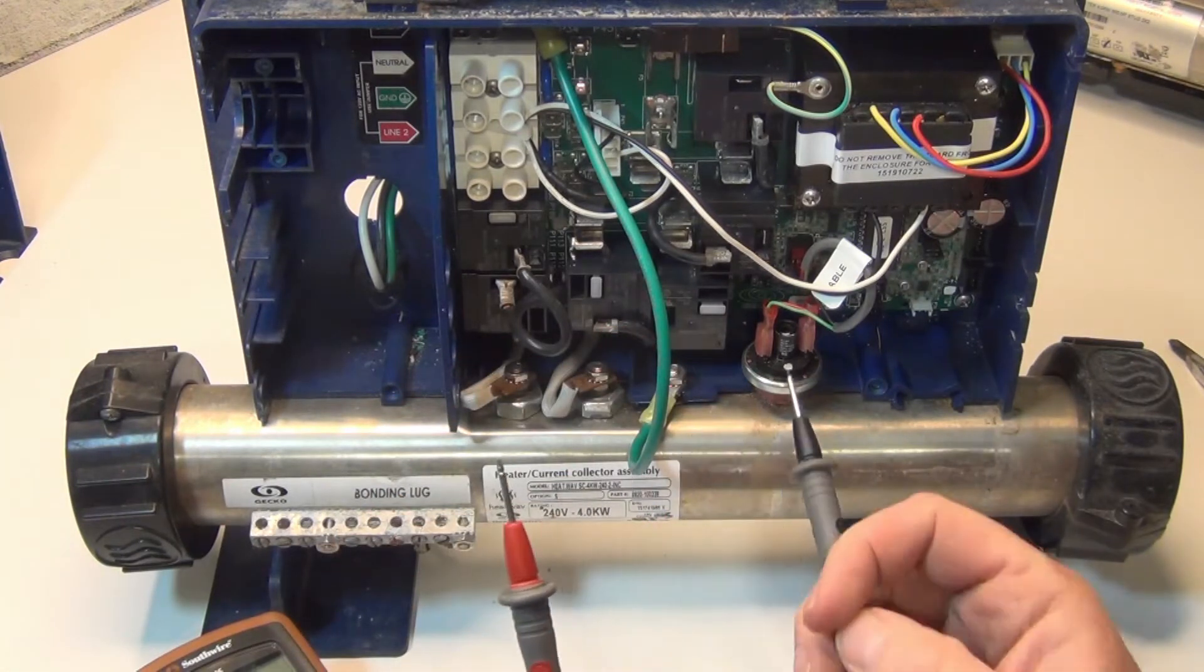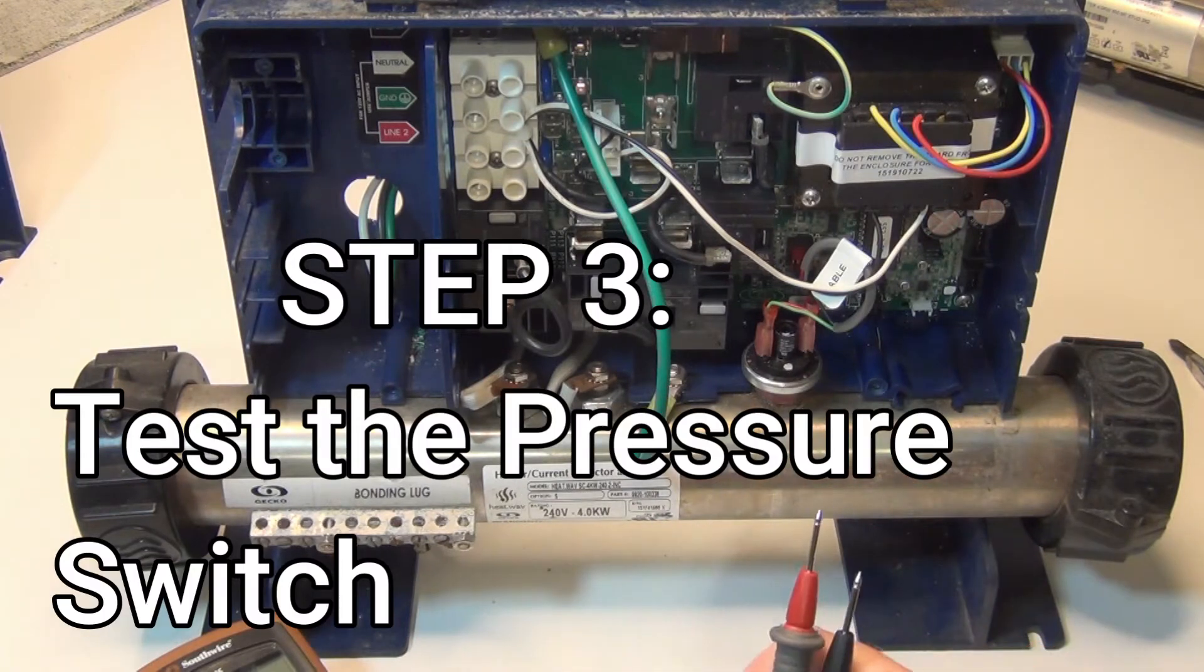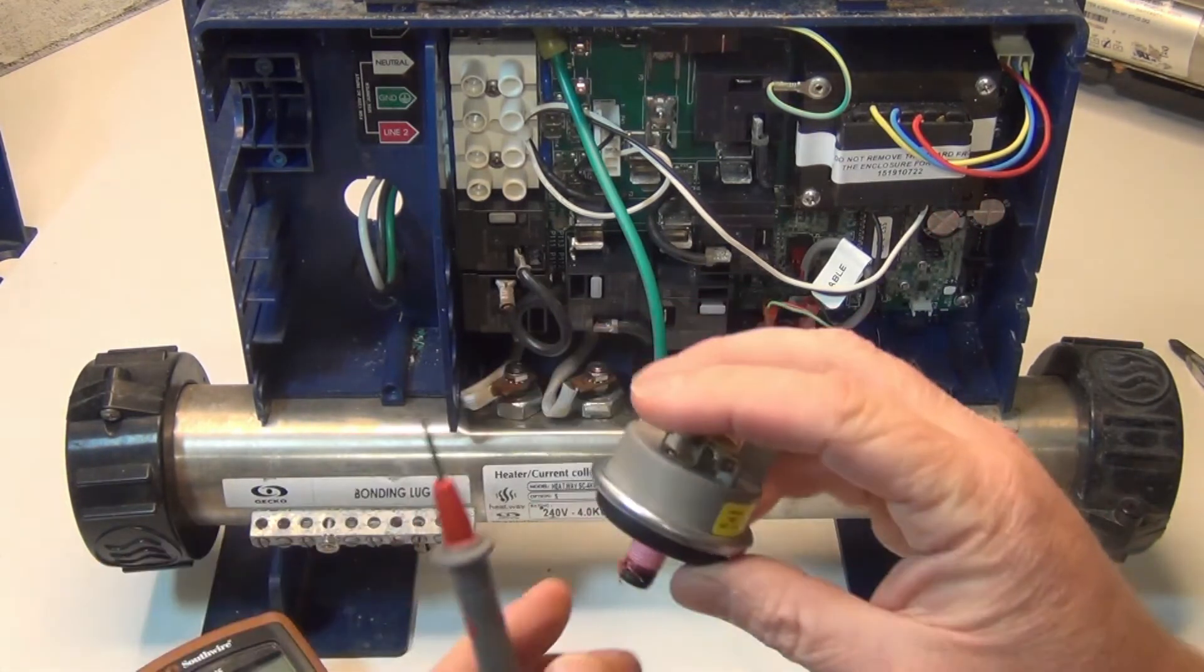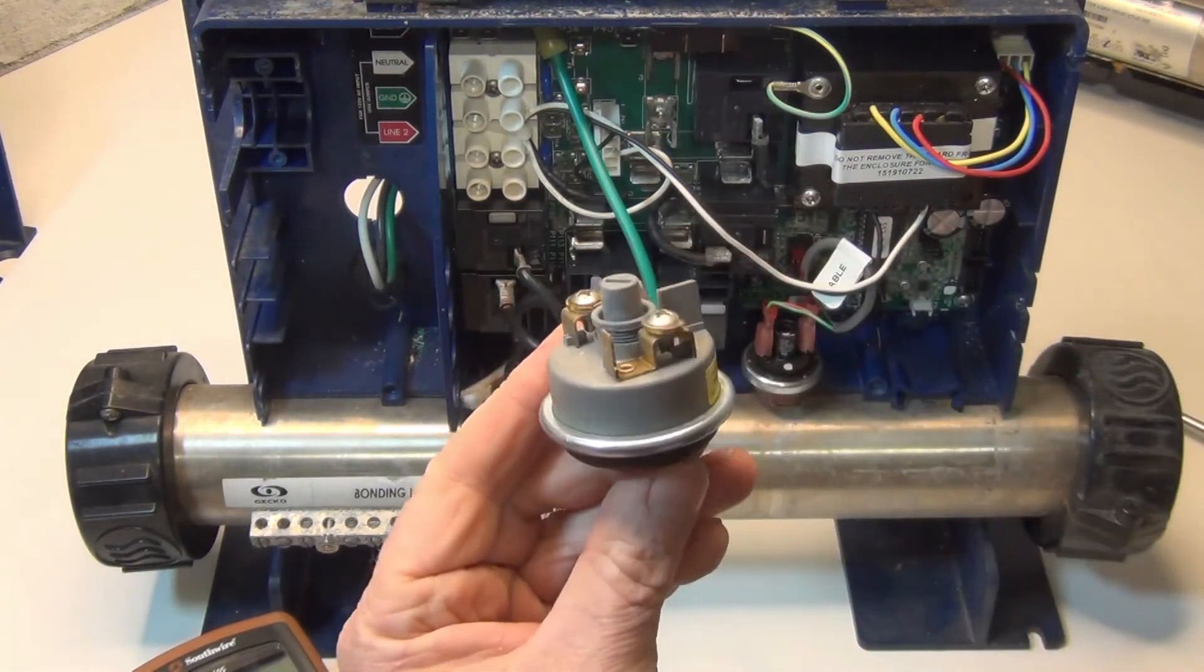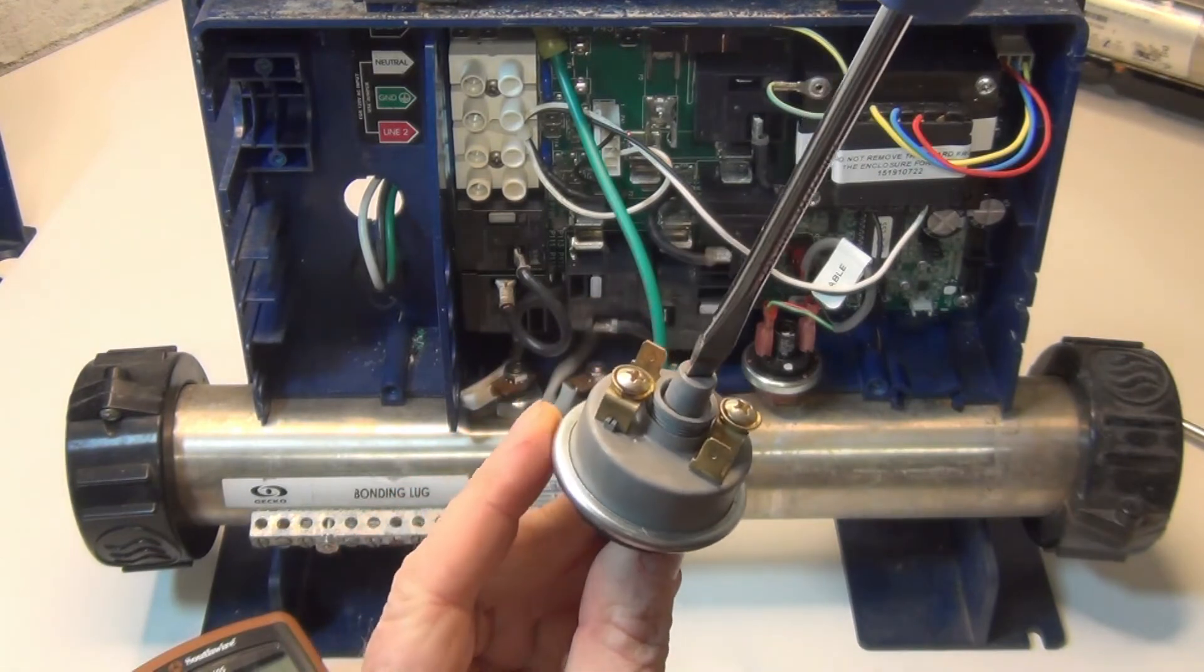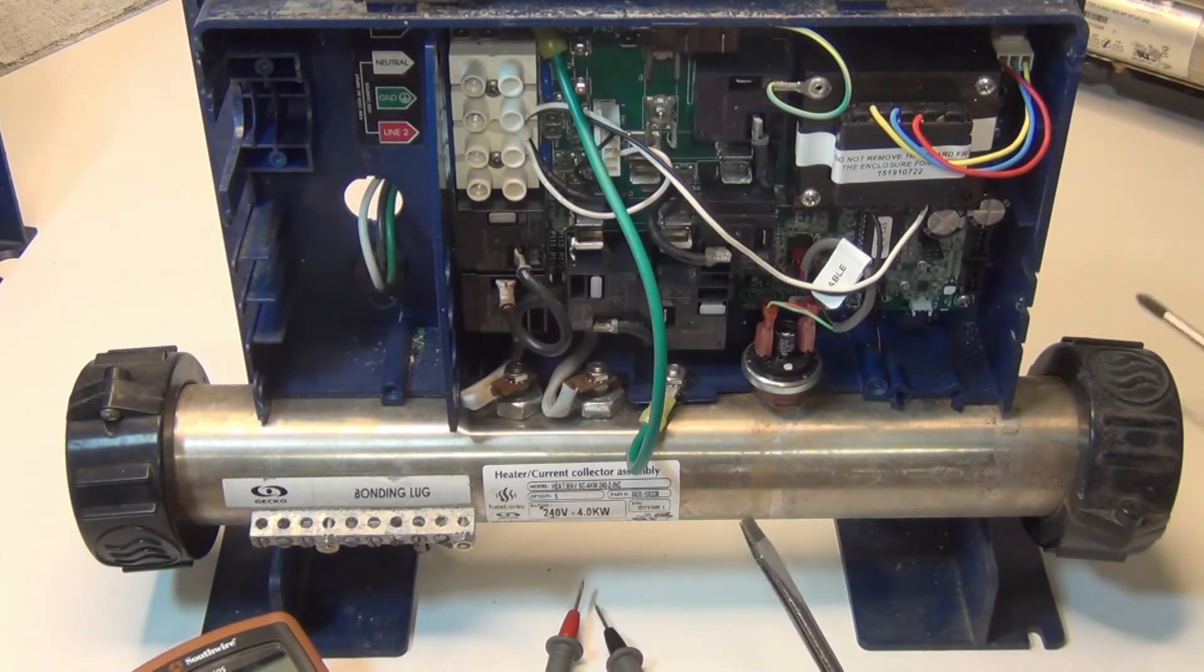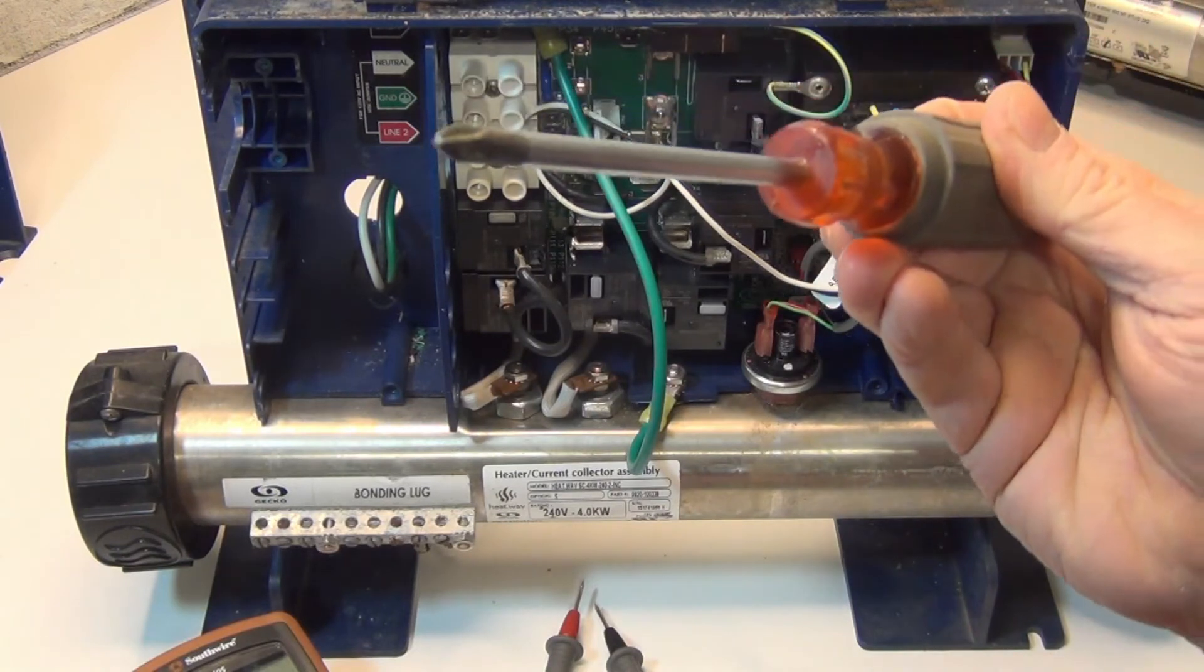The next thing you can try if it's not heating is your pressure switch. Now this particular one here you can adjust it at the top. Most of them you can adjust. This one you can adjust it with a screwdriver while it's sitting in there. It's a little tougher with certain ones you can't get a screwdriver in there because it's live, you got to be careful with the screwdriver.